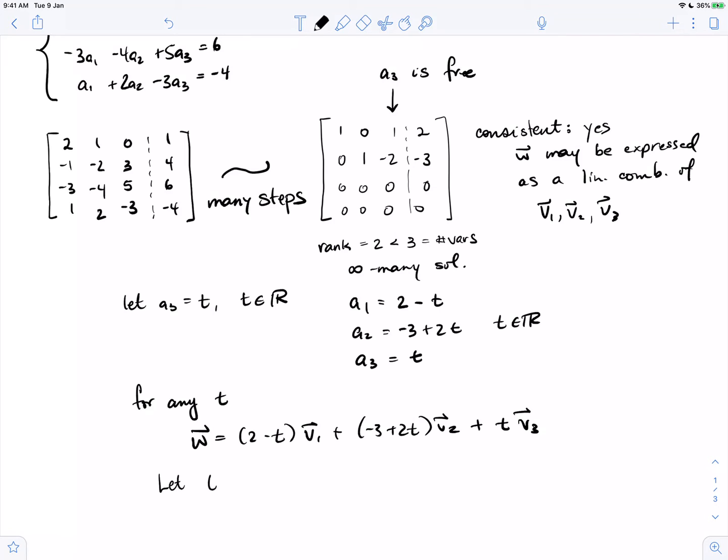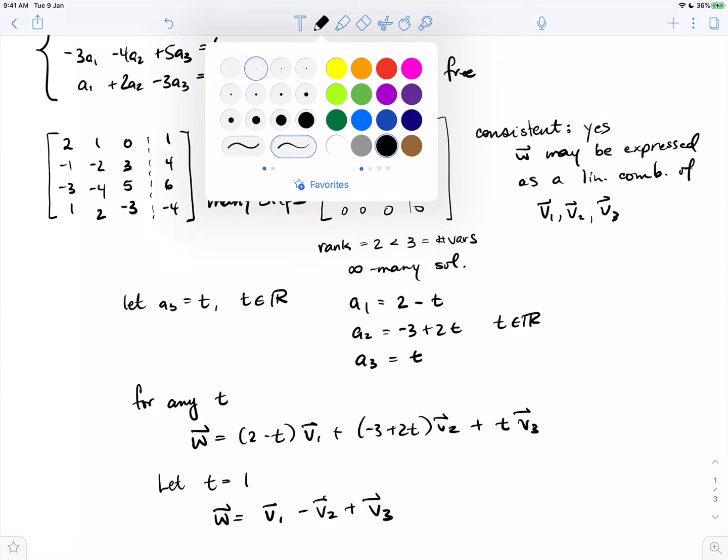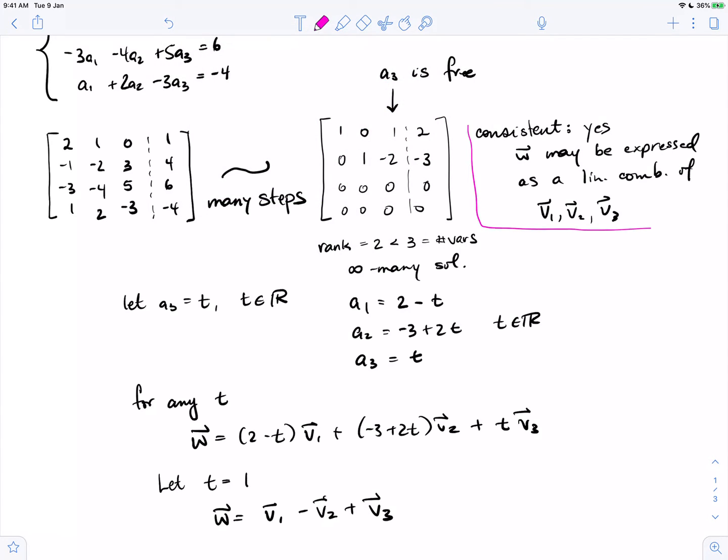There is an example of a linear combination. But the answer to the question we were asked: may w be expressed as a linear combination of these vectors? The answer is yes. W can be expressed as a linear combination of these three vectors.